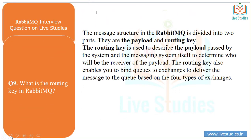Another question: what is the routing key in RabbitMQ? The message structure in RabbitMQ is divided into two parts: the payload and the routing key. The routing key is used to describe the payload passed by the system, and the messaging system uses it to determine who will be the receiver of the payload. The routing key also enables you to bind a queue to an exchange to deliver the message based on the four types of exchanges.